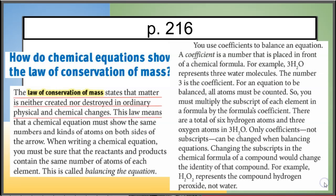Let's start with the law of conservation of mass. It states that matter is neither created nor destroyed in an ordinary physical and chemical change. This law means that we have to balance equations — we have to have the same number of atoms at the end of a chemical reaction as we had at the beginning.